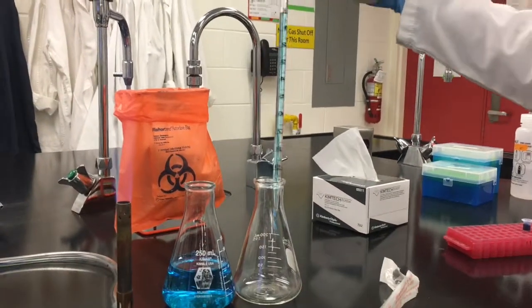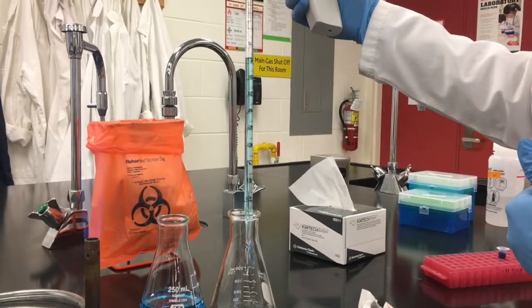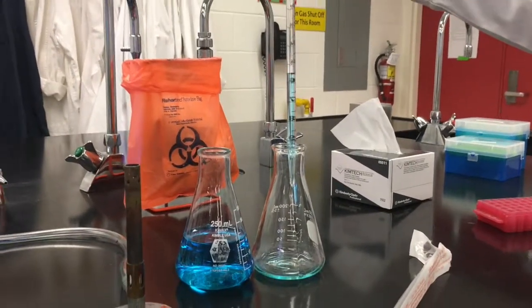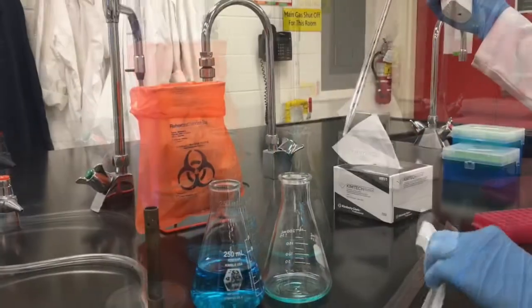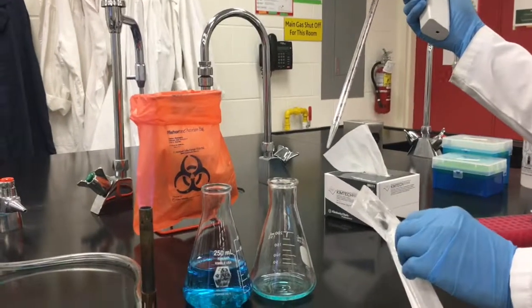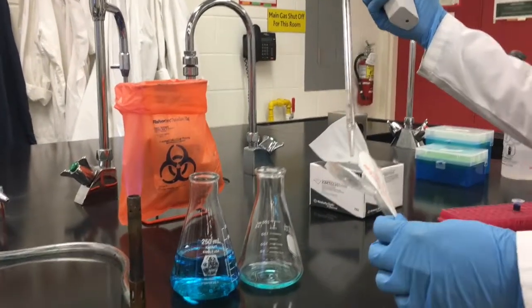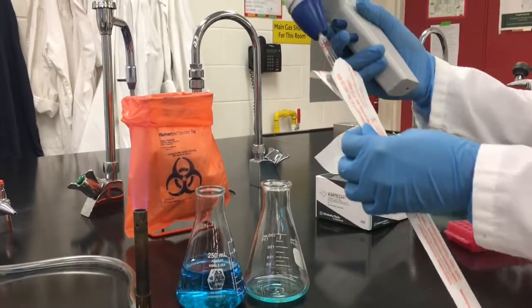Carefully transfer the tip into your receptacle. Dispense the liquid down the side of the container to avoid splashes. Replace the sleeve over the pipette tip for safe disposal. This prevents puncturing the garbage bag or biohazard bag that it is placed into.